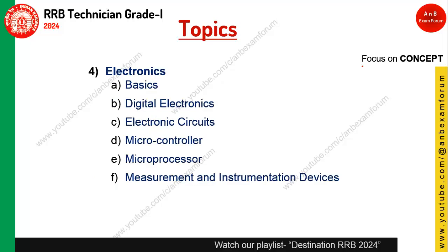For Electronics, focus mainly on concepts as it has very few numericals. In digital electronics, expect one to two questions on topics like binary to decimal conversion and logic gate simplification. Basic knowledge of electronic circuits, microcontrollers, and microprocessors is needed — just the basics, like what's inside them and about ICs. The last topic, Measurement and Instrumentation, is relatively simple but should not be ignored.